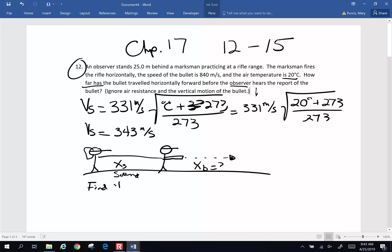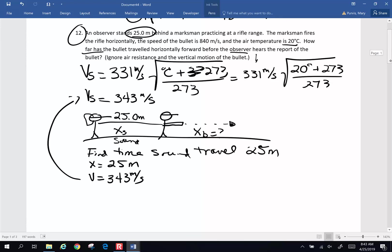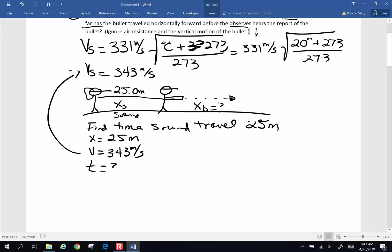So in order to do this, we're going to have to find, first off, the time it's going to take for the sound to travel a distance of 25 meters, because the listener is 25.0 meters behind the shooter. So find the time for the sound to travel the 25 meters. So we know displacement is 25 meters. We know the velocity of sound on this day is 343 meters per second. We found that right up here. And we are going to calculate time. So time is question mark.